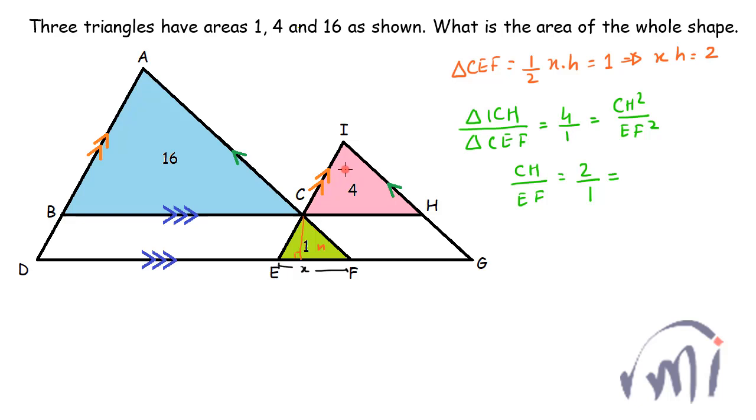So if I assume the height of this triangle as h1, then the ratio of h1 and h, which is the height of this triangle, will also be 2 is to 1. So you can say this base will be equal to 2x and this height will be equal to 2 times the height of the triangle CEF.